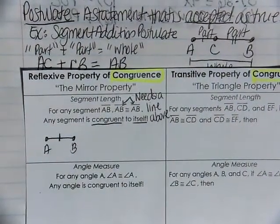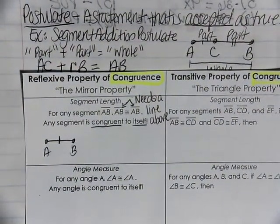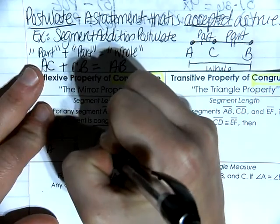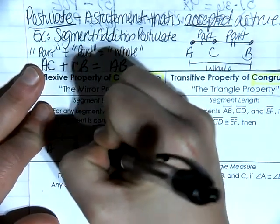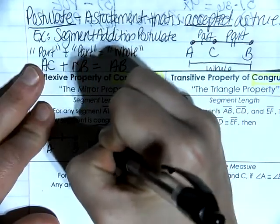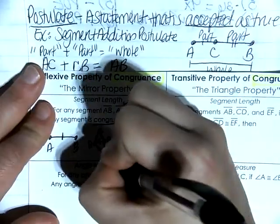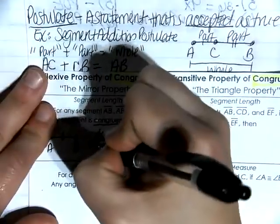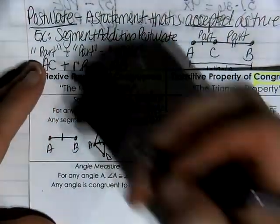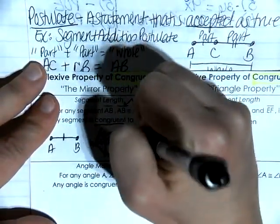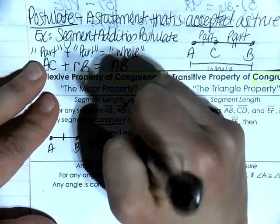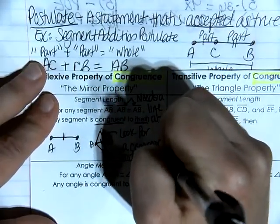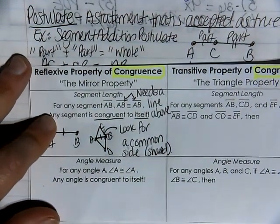There will be times when we are working with segments where a segment overlaps with shapes — for example, overlapping triangles that share a segment. Let's say we're talking about segment AB and a relationship between two triangles. We can say that segment AB is congruent to segment AB because they share a common side. Look for a common or shared side — that's primarily when we use the reflexive property of congruence.